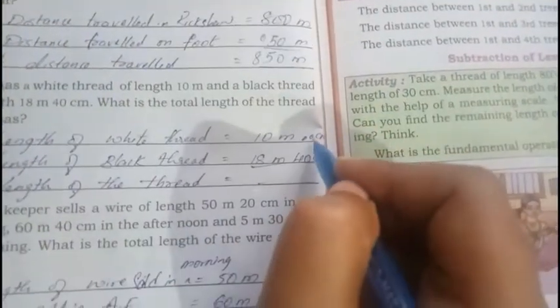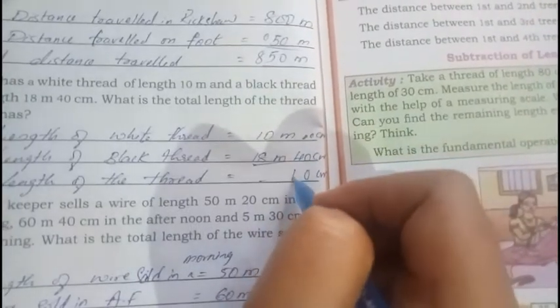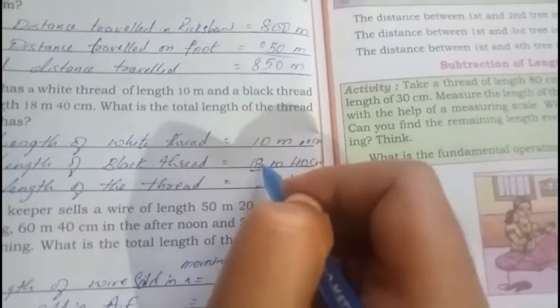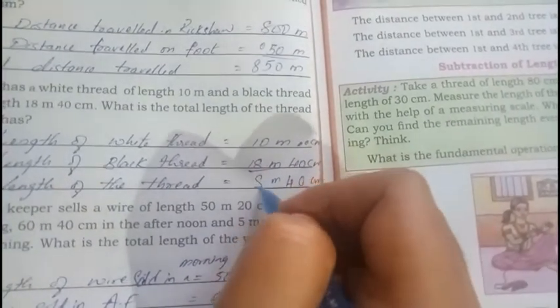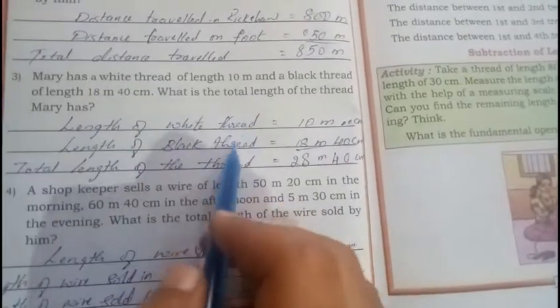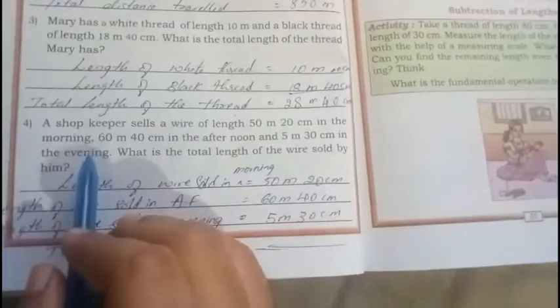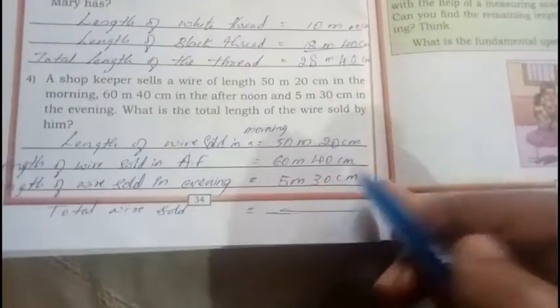So 0 plus 0 is 0 centimeters, 0 plus 4 is 4 meters. So 8 plus 0 is 8, 1 plus 1 is 2. Okay, 28 meters, 40... 30 centimeters. Please read these things. Write it down carefully in your notes and in textbook both, okay? Here, this is the fourth question. I have already solved. Just add these numbers and write it down below.